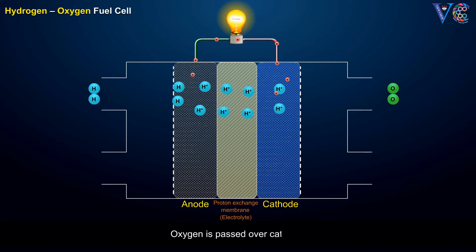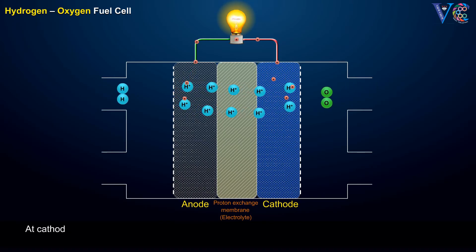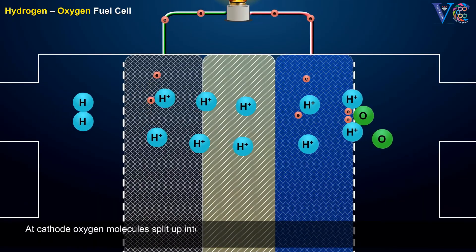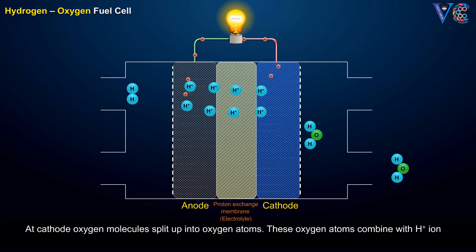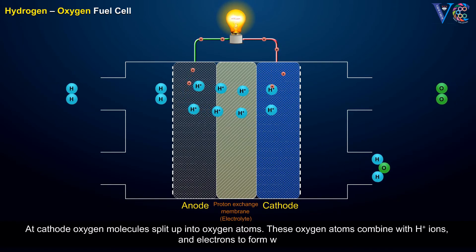Oxygen is passed over the cathode. At the cathode, oxygen molecules split up into oxygen atoms. These oxygen atoms combine with H+ ions and electrons to form water.